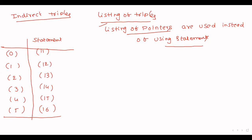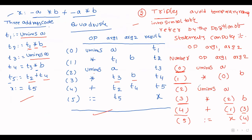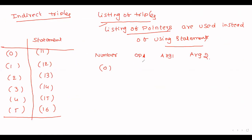Here is the meaning: instead of writing 0, from now on statement 0 is represented with pointer 11. Consider the example with fields: number, op, argument 1, argument 2. The first entry is 0: unary minus, A. That's fine — unary minus and A.